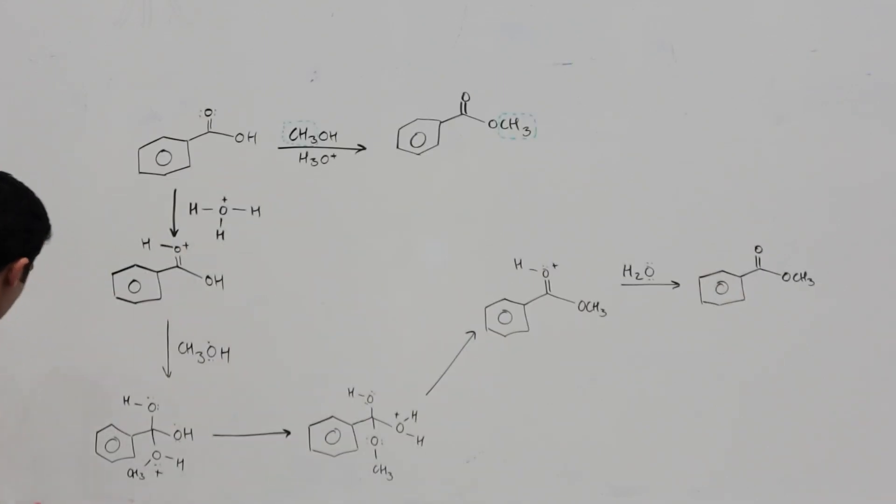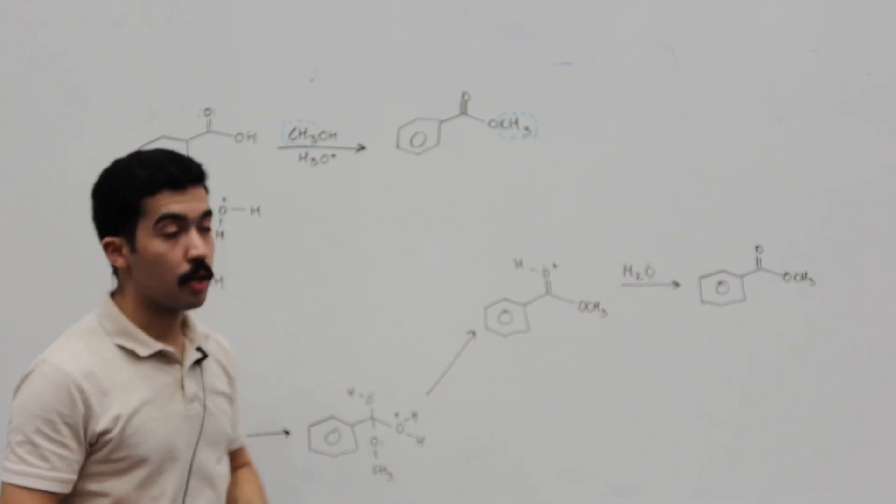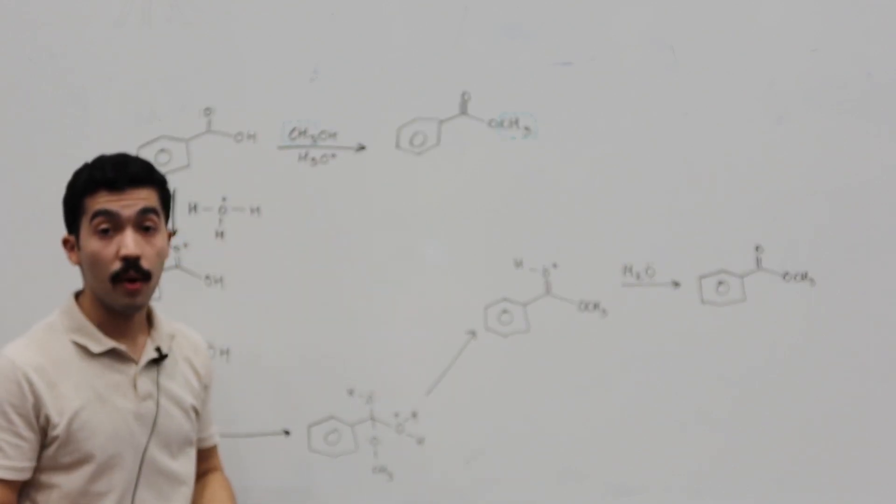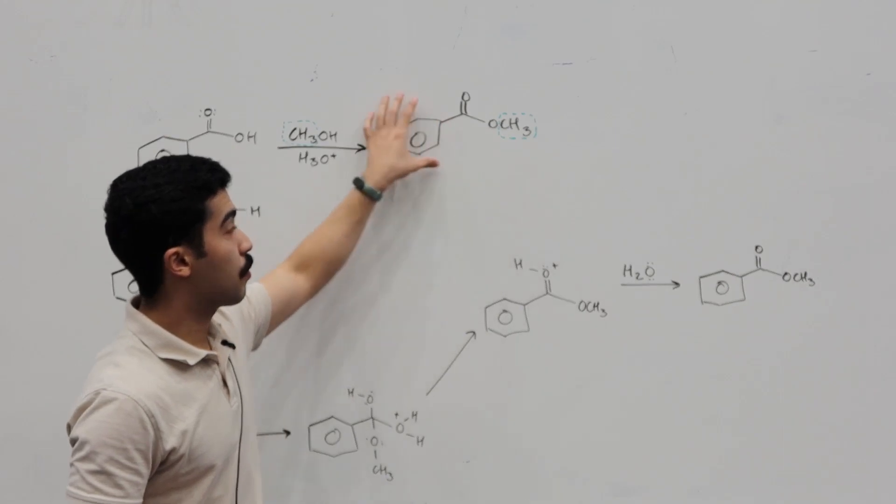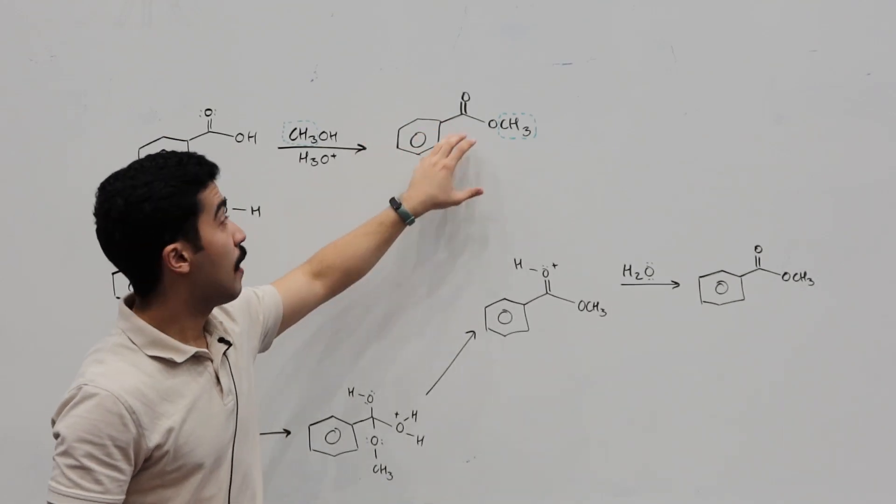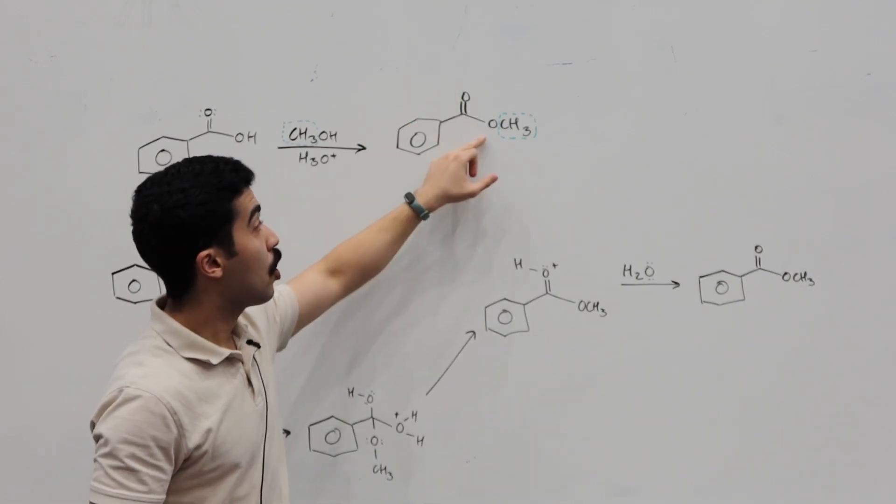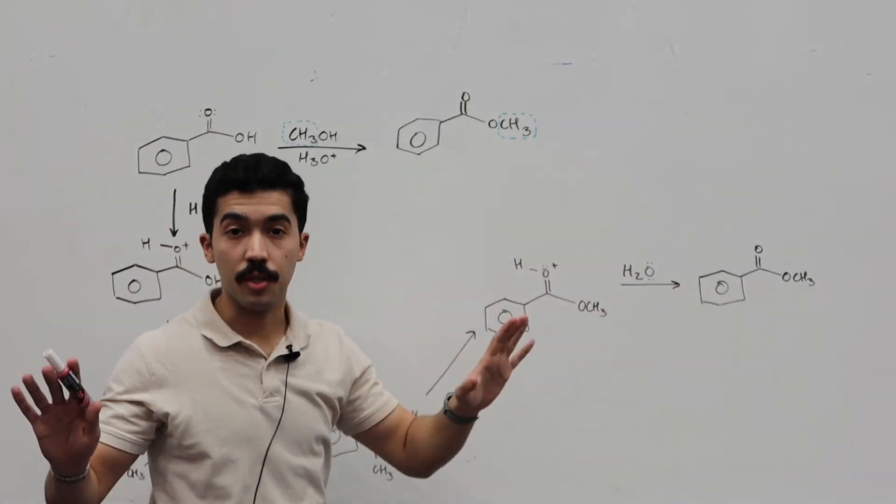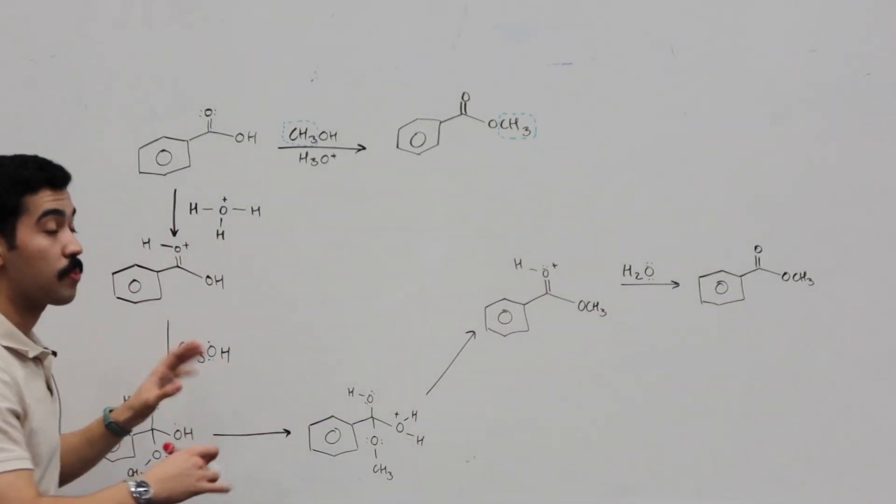You can replace this with R'OH, and you'd end up with whatever you have here. So your R group, and then C double bond O, O, R'. This is just, this example here is a specific application,